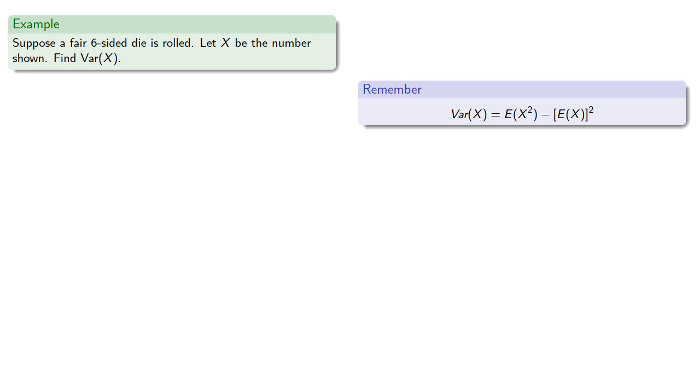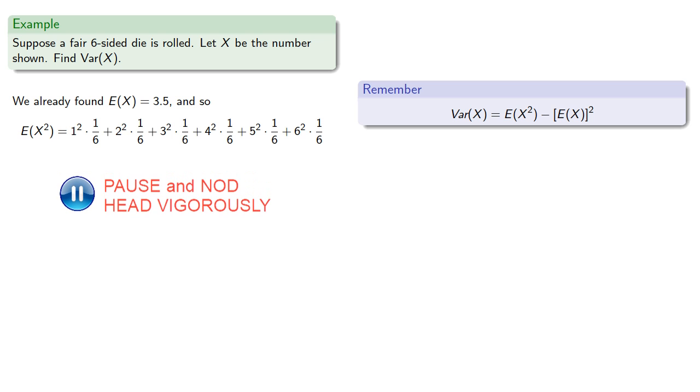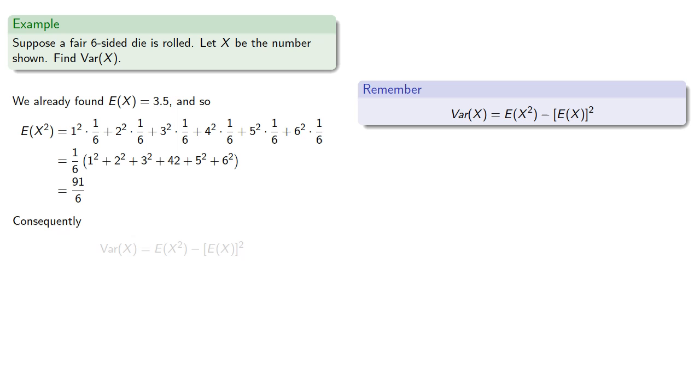And we already found the expected value of X, that's 3.5, so we can find the expected value of the square, that's the squares times the probabilities. And so we'll get 91 sixths. And consequently, we can find the variance, which will be 2.917.